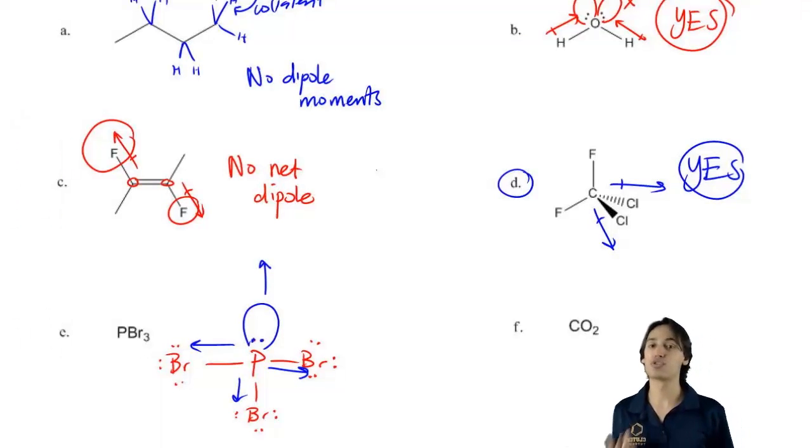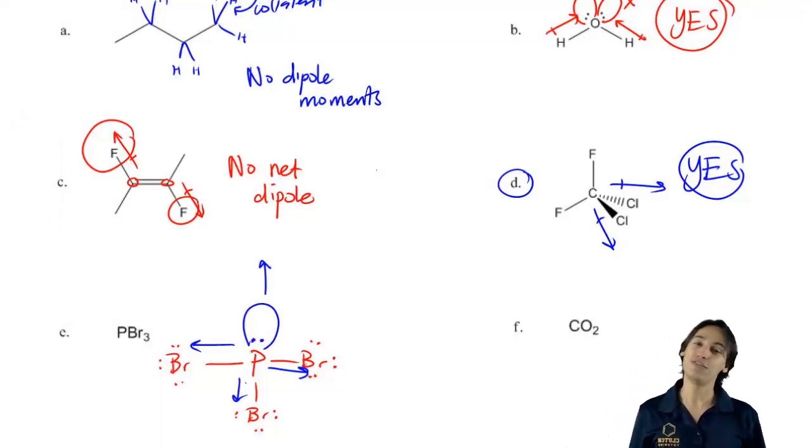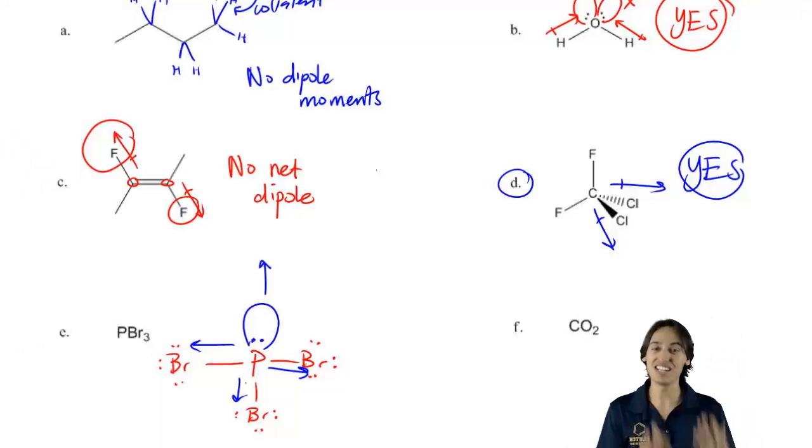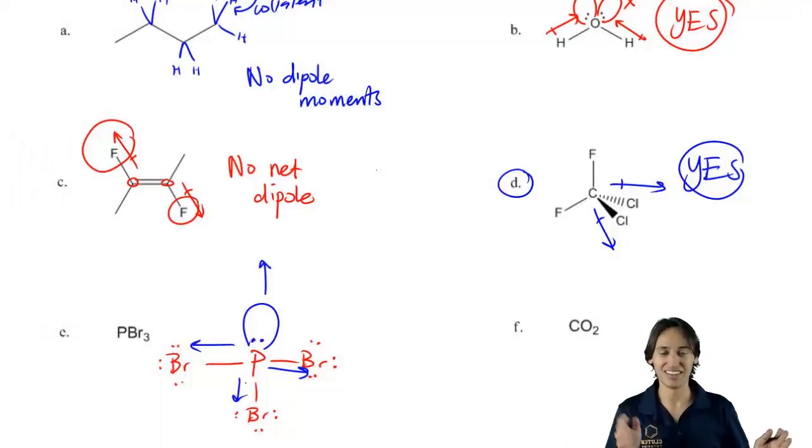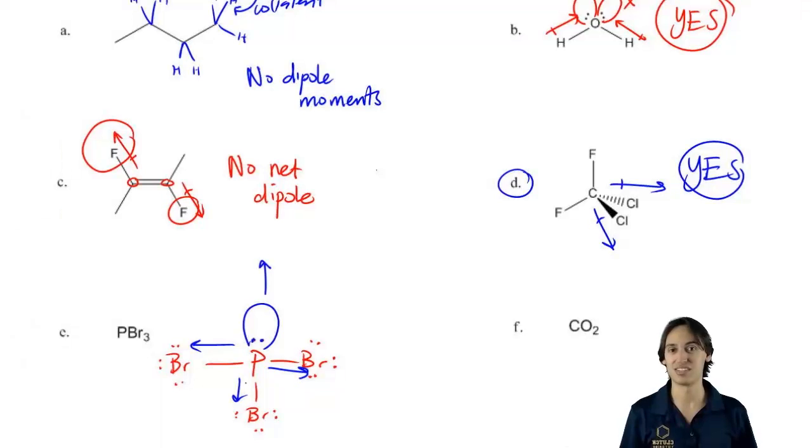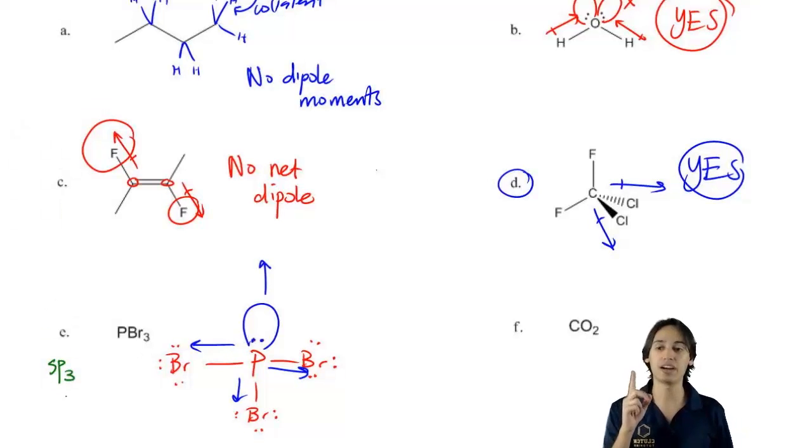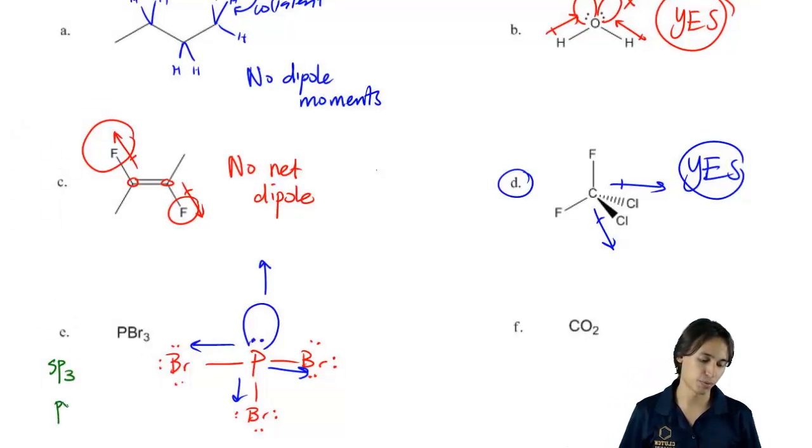On top of that, I didn't even draw this correctly. If you were to figure out the hybridization of this, but if you were to figure out the hybridization of this phosphorus, what you would find out is that the hybridization is sp3. Since it has one lone pair, you would find out that it has a shape of pyramidal.